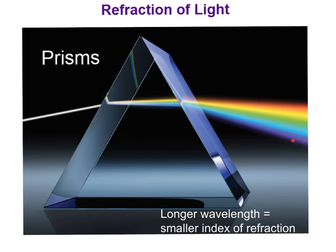All of the other wavelengths of different colors will be bent at different indices when they emerge. When they come out the other side of this prism, you can see how refraction causes them to bend differently and those colors can be seen individually.